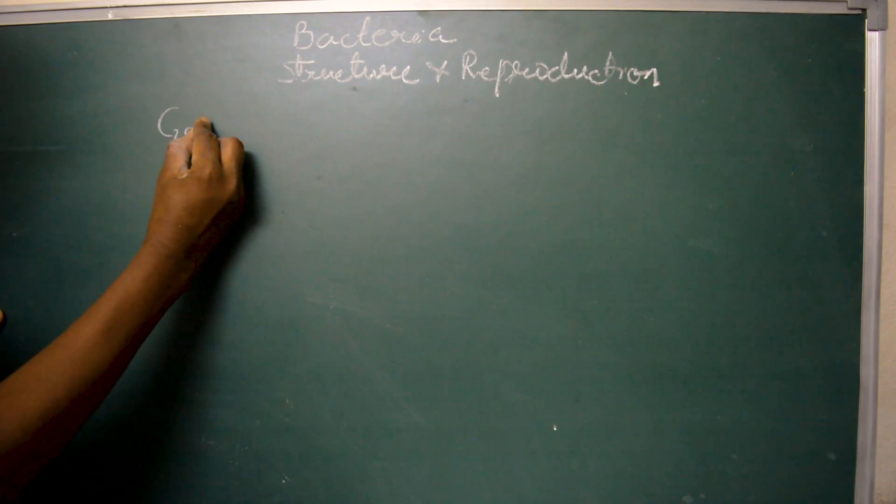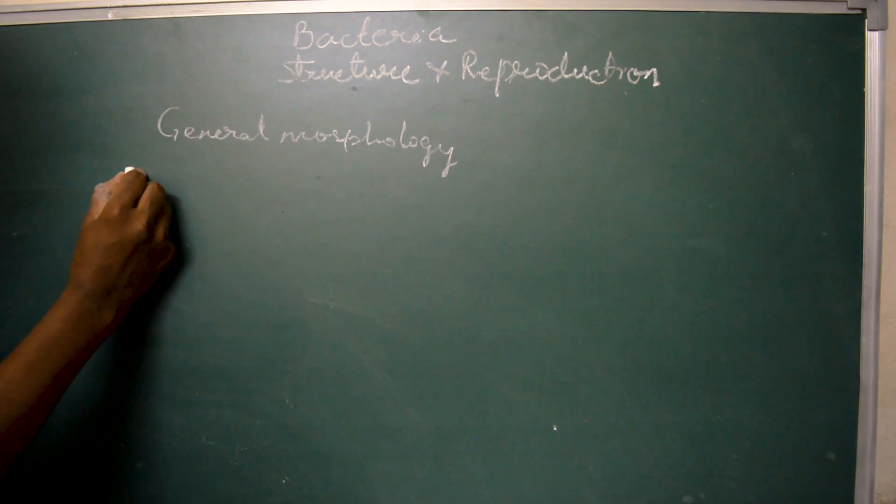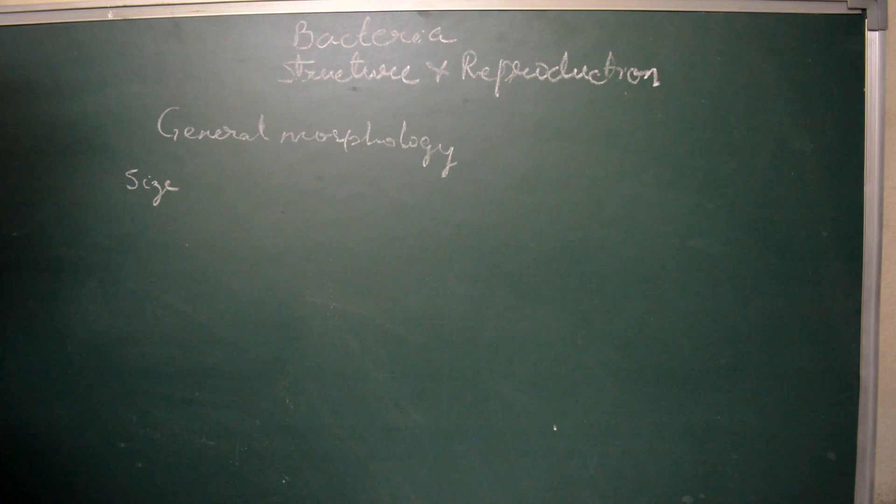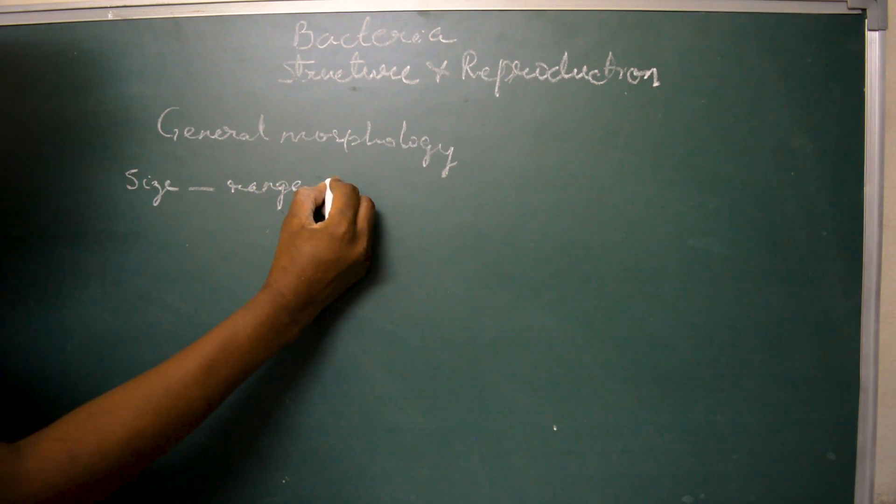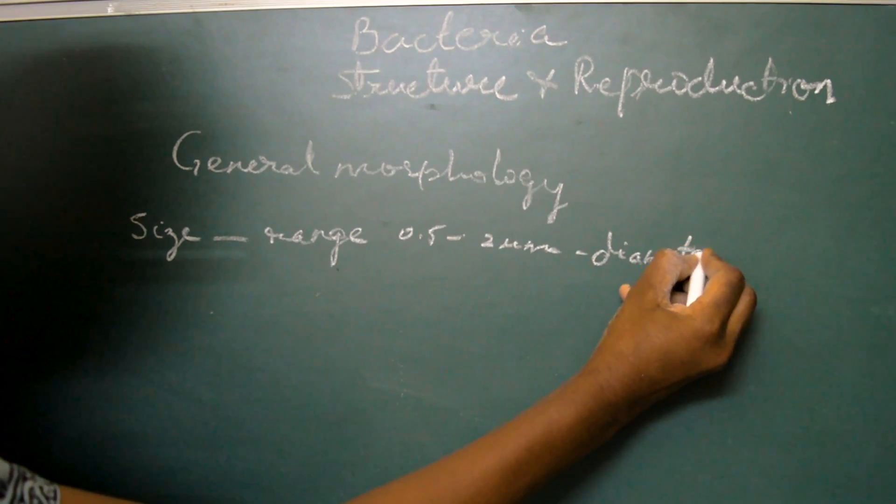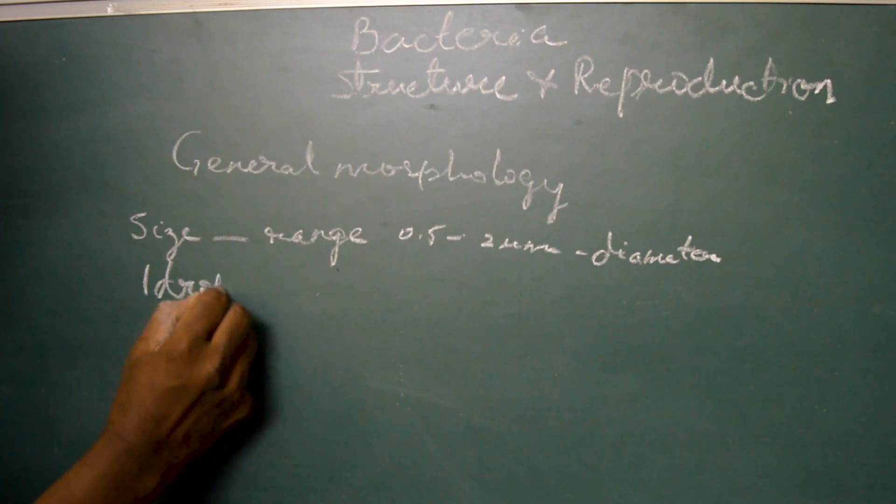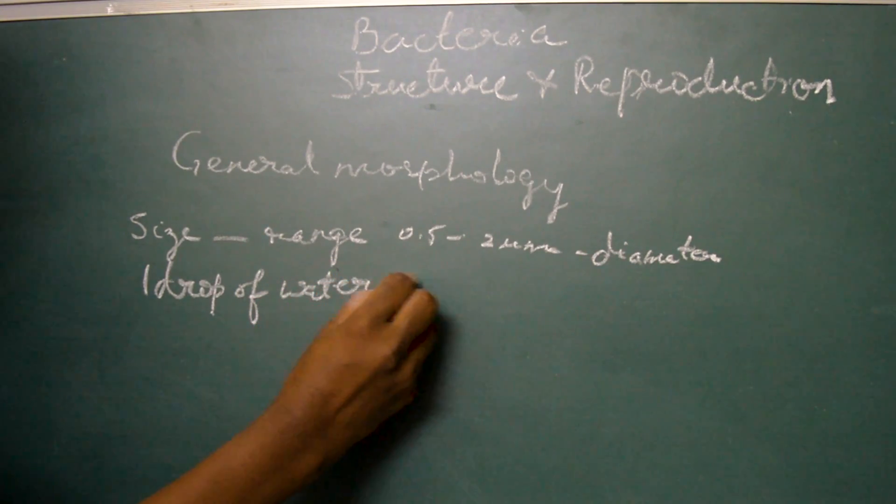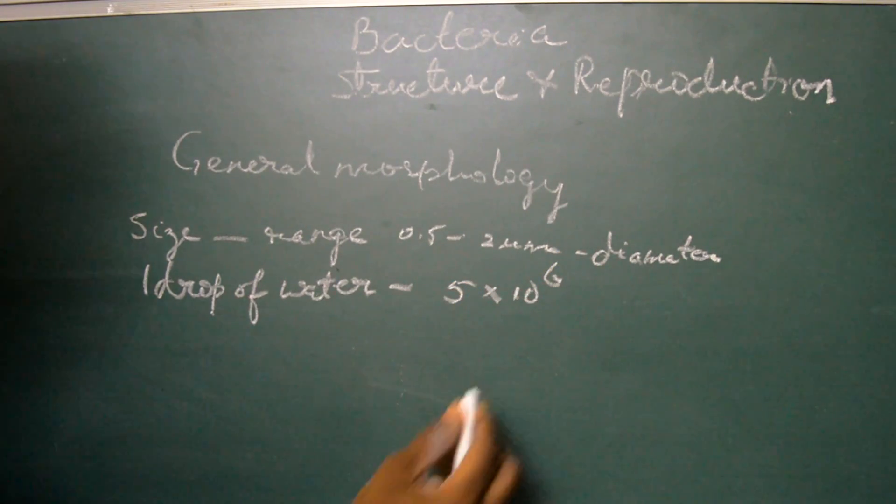The general morphology includes the size of bacterial cells. The size ranges from 0.5 to 2 micrometers in diameter, but they are also seen in a variety of lengths in certain bacilli type of bacterial cells. One drop of water approximately shows 5 into 10 to the power of 6 bacterial cells.